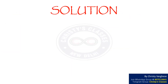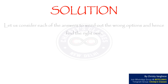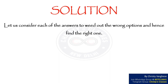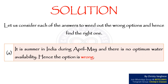Solution: Let us consider each of the answers to weed out the wrong options and hence find the right one. Consider option A. It is summer in India during April to May, and there is no optimum water availability. Hence, the option is wrong.